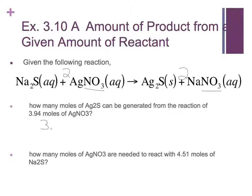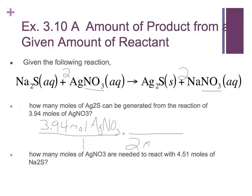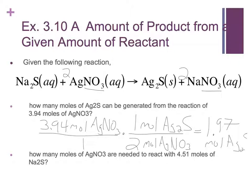We start like any dimensional analysis problem: 3.94 moles of silver nitrate. The ratio from silver nitrate to silver sulfide is 2 to 1 — two silver nitrates make one silver sulfide. We say the silver nitrate needs to cancel out: two moles of silver nitrate will make one mole of silver sulfide. That makes sense — it's half. If I start out with 3.94, I get half as much, giving 1.97. The units we're left with are moles of silver sulfide.